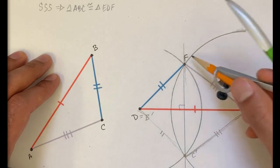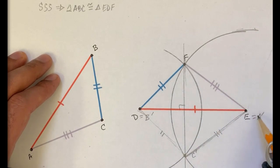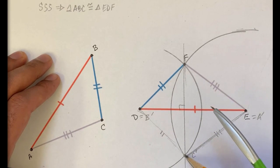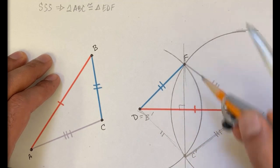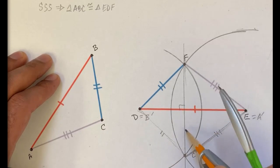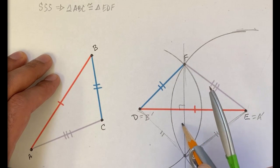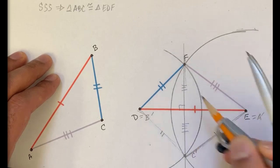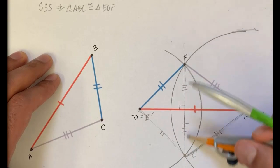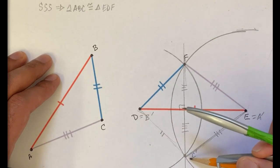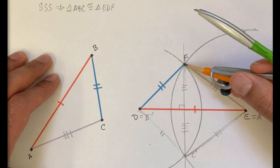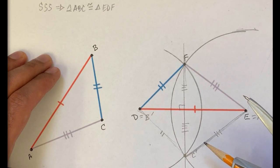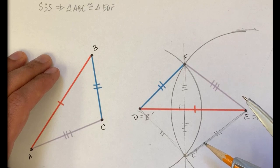We just have to do a reflection about ED or about A prime, B prime, however you want to view it, about this orange line. And then C will coincide with F because orange is a perpendicular bisector. So I could do something like this. This length is the same as this length. And since it's perpendicular bisector, when you do the reflection, C prime will then coincide with F. And a reflection is a rigid transformation. So we would be all good.